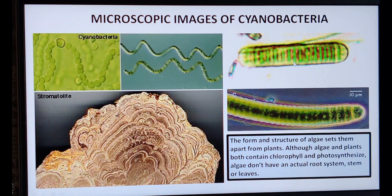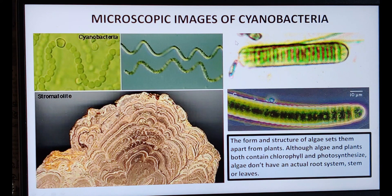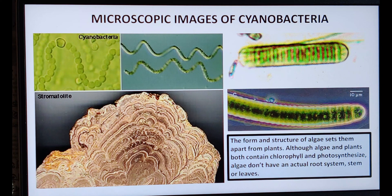These are a few micro images of cyanobacteria, or blue-green algae — they are elongated in nature. The form and structure of algae sets them apart from plants. Although algae and plants both contain chlorophyll and photosynthesize, algae do not have an actual root system, stem, or leaves unlike plants. Thus they are the most simple form of plants.